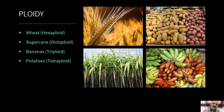Ploidy is very interesting. Many crop plants have different levels of ploidy: wheat is actually hexaploid — it has 6n. Then we have sugarcane, which is octoploid; bananas, which are triploid; and potatoes, which are tetraploid. You can see the diversity of crops because of the ploidy levels. For example, solanaceous crops will have a diploid genome, but potatoes are tetraploid.